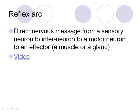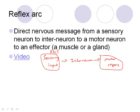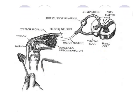The reflex arc is the direct nervous message from a sensory neuron to an interneuron to a motor neuron. It takes the input from the sensory neuron, passes it to the interneuron in the CNS where the signal is interpreted, and sends it out the motor neuron to a muscle or gland as a response.